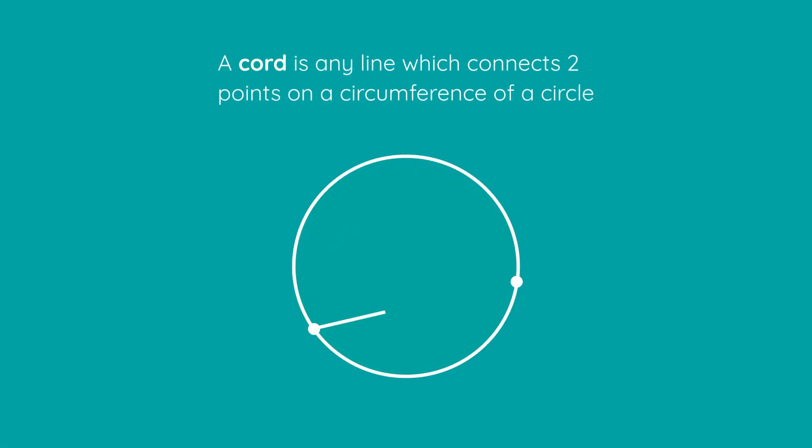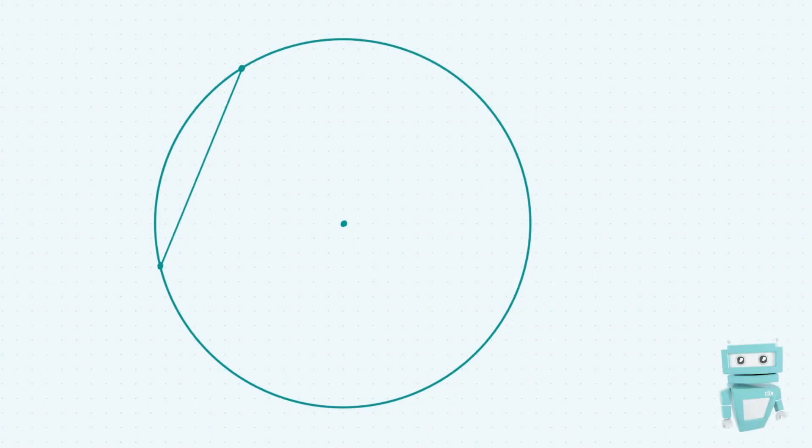So if we just have a circle like this, what we're going to do now is just draw a chord. And to remind you what a chord is, a chord is any line which connects two points on the circumference of a circle. So for instance, this line connects two points on the circumference of a circle, therefore it's a chord.